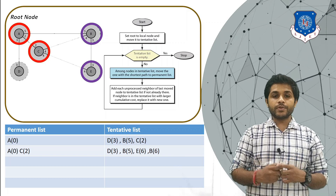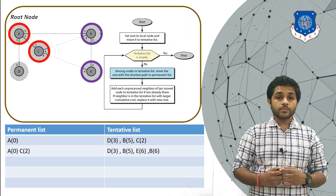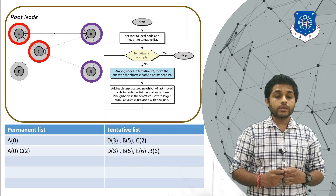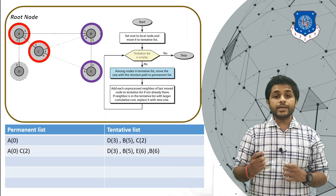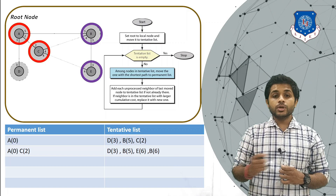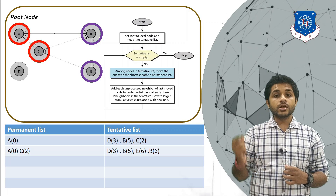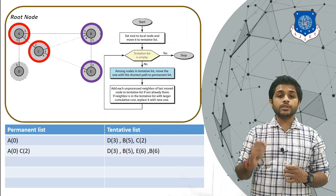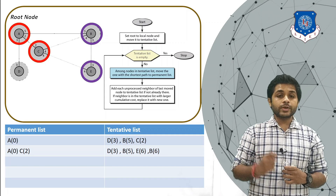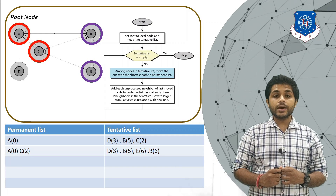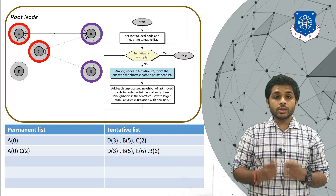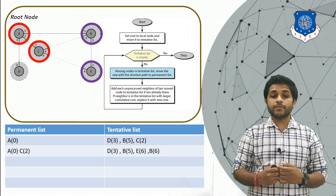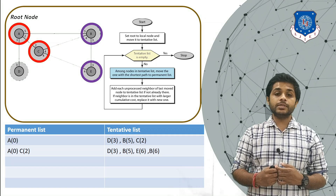One important thing to consider: when you find the same node with different distances, you only keep the node with the shortest distance. We have B(5) and B(6) — the node is the same but the distances differ, so we keep B(5) and eliminate B(6).